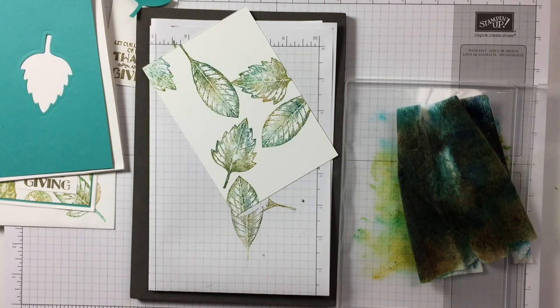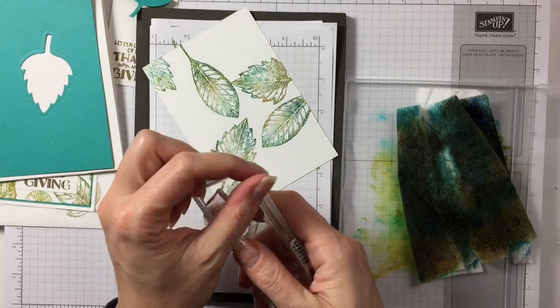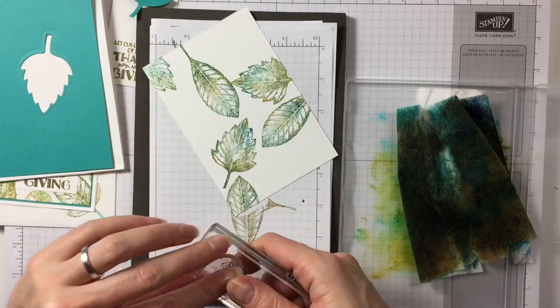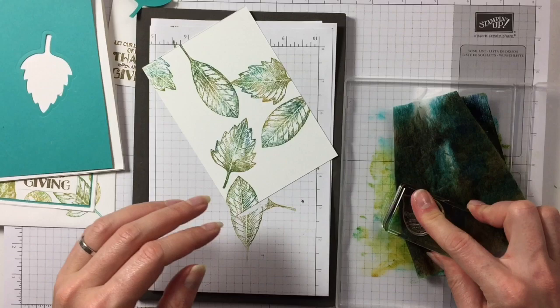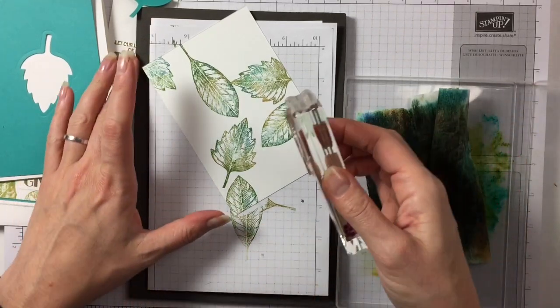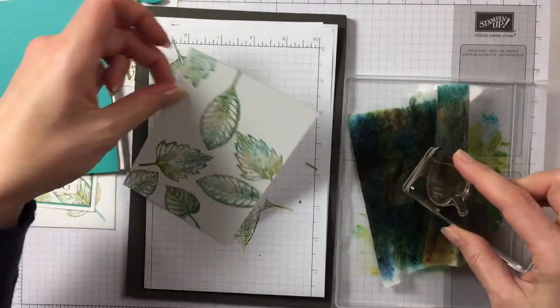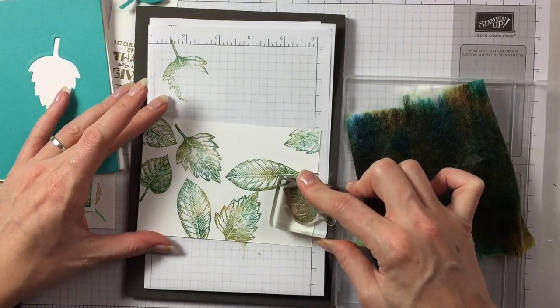There we go. Clean that one off and let's get another one out. Here we are. This one here, the smaller one. So you start with the biggest leaf and then you go to smaller ones. And basically, I just stamp them in any direction.